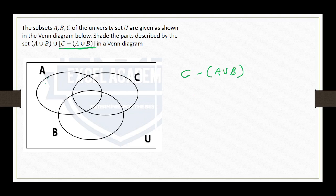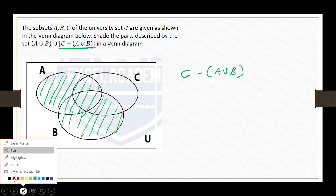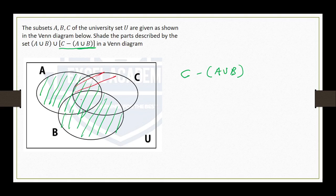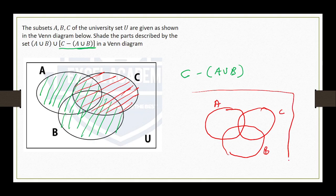I'll first sketch A union B — A union B is the region I'm sketching using green. Then I'll also shade the region which is C, so the part for C is this particular region. What we are now looking for is C minus (A union B). If I redraw this diagram: this is set A, this is set C, this is set B, and I have my universal set outside.